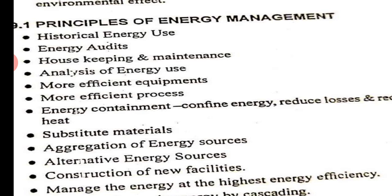Then substitute materials — sometimes you can substitute materials as well. Then aggregation of energy sources — different sources can be aggregated, like renewable and conventional. Then use alternate energy sources. For example, if you are having an electrical geyser for heating water, you can change it from electrical to LPG gas geyser, or you can change it to a solar geyser. These are alternate energy sources.